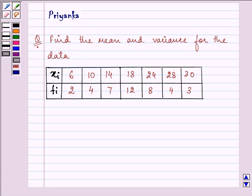Hello and how are you all? The question says find the mean and variance for the data. Now here we are given the xi's and the fi's of this data. We need to find out the mean and the variance.